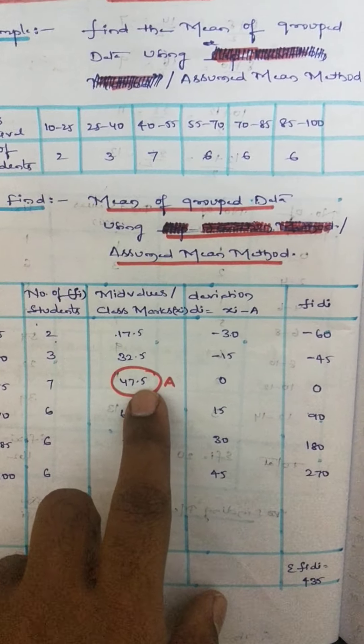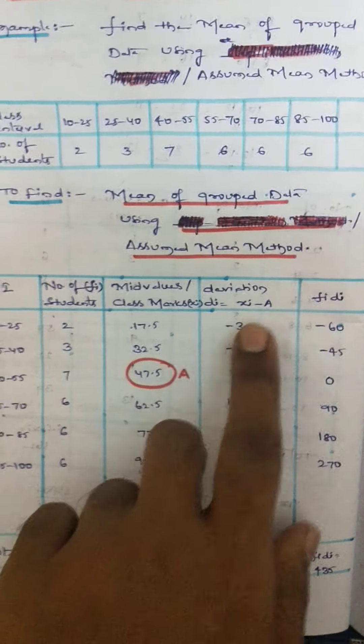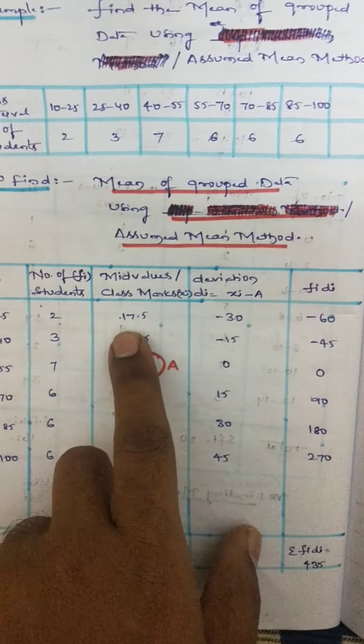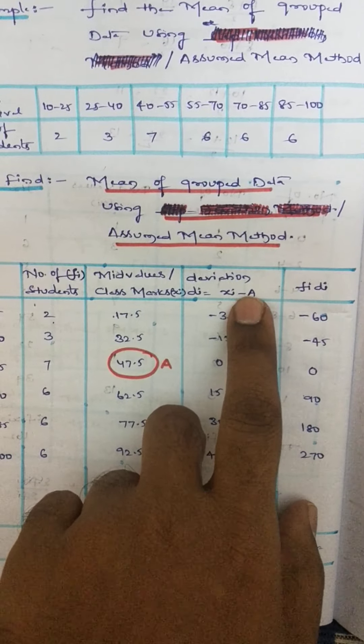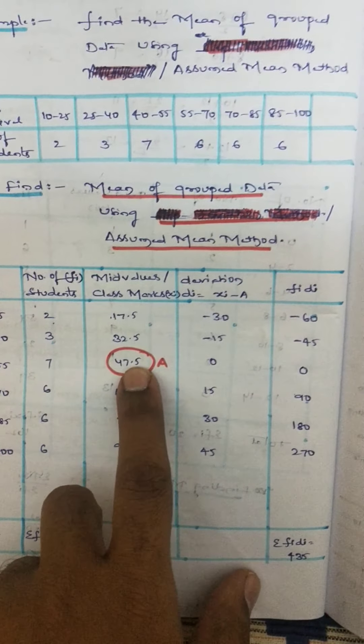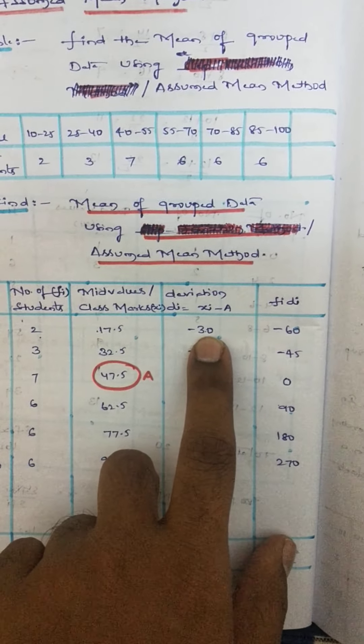17.5 subtract 47.5, that is the form here. Xi is 17.5 minus A is 47.5, we will get minus 30.